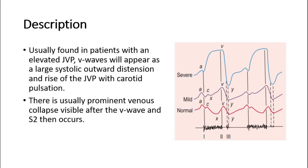In this picture, the bottom pink line shows normal jugular venous waveform. The middle purple line shows the waveform of mild tricuspid regurgitation, whereas the upper blue line shows severe TR with a large V-wave.